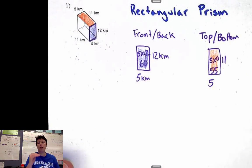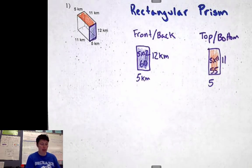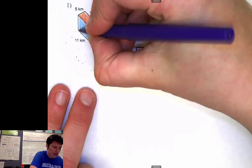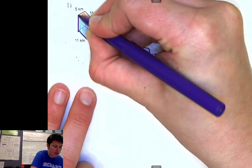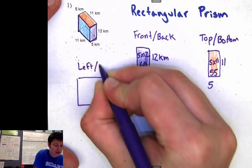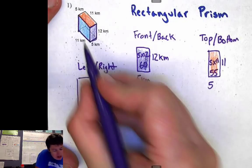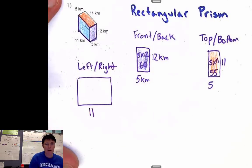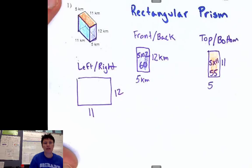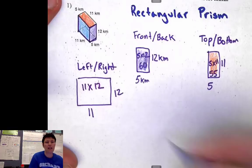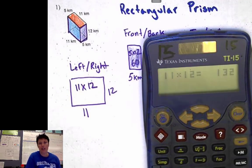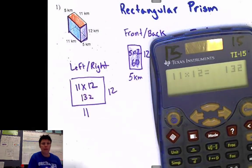I've done the top and bottom, the front and back — now I need the left and right, which I'm going to do in blue. That is this big face right here, a big rectangle. I'm labeling it 'left and right' over here. If you look at our picture, the dimension goes 11 kilometers long, and height-wise this dimension was 12 — so it's an 11 by 12 rectangle. We need to do 11 times 12, which is 132. So it has an area of 132 on the left and the right side. I'll color that in blue to match my picture.